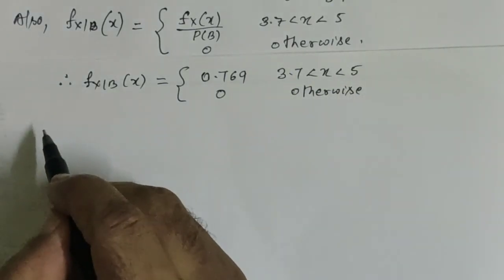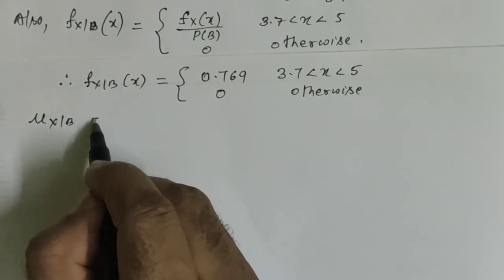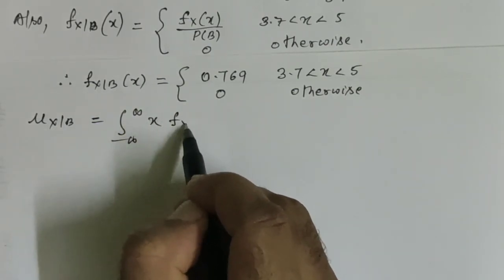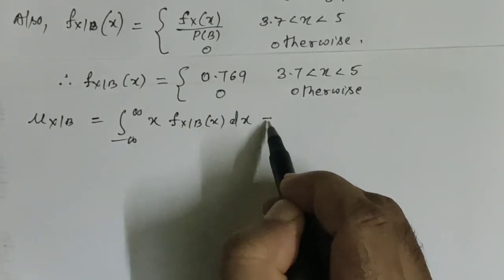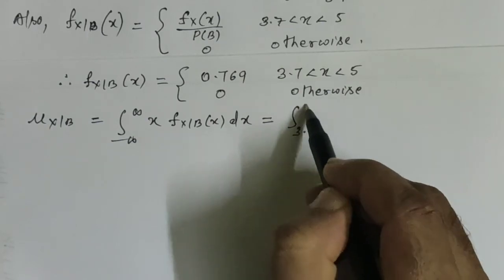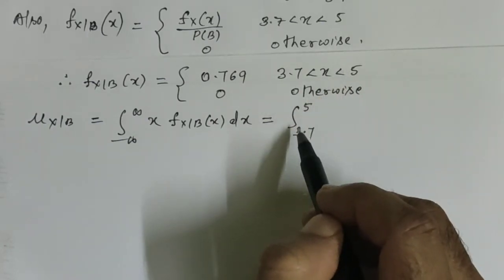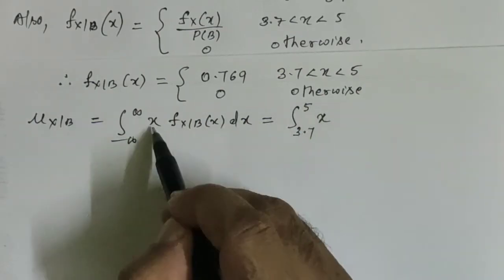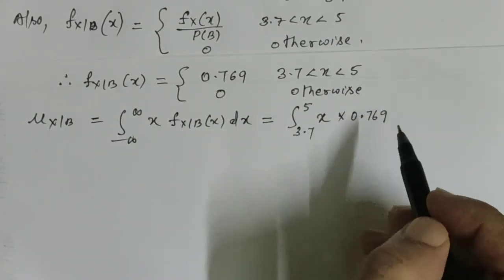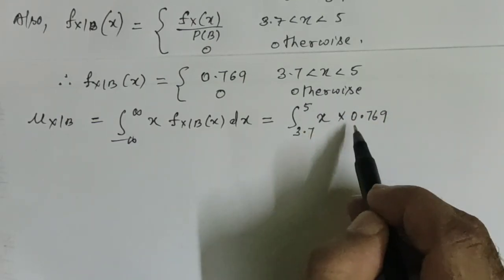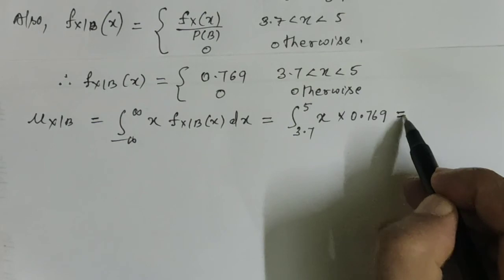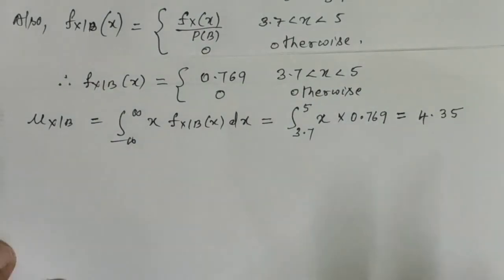Now we find the conditional mean of X given B. E[X|B] = integral from -∞ to +∞ of x·f_{X|B}(x) dx = integral from 3.7 to 5 of x·0.769 dx. Integrating x gives x²/2, then multiplying by 0.769 and substituting limits 5 and 3.7, we get E[X|B] = 4.35.